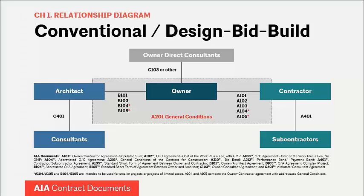Let's look at the relationship between the project's parties and how the General Conditions ties into the other agreements for a project. In traditional design-bid-build project delivery — what AIA calls conventional delivery — the owner selects the architect first to design the project and produce construction documents, then solicits bids to select the contractor. The A-201, the gray rectangle in the middle of the slide, provides the general conditions that define and coordinate the roles, responsibilities, relationships, and risk allocation between the owner, architect, and contractor — the rules of engagement for the project.